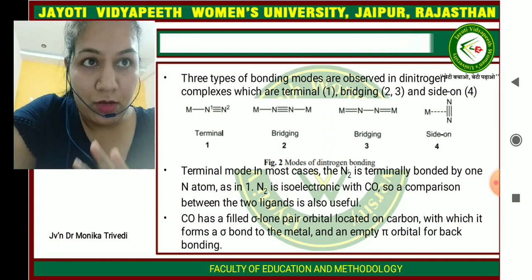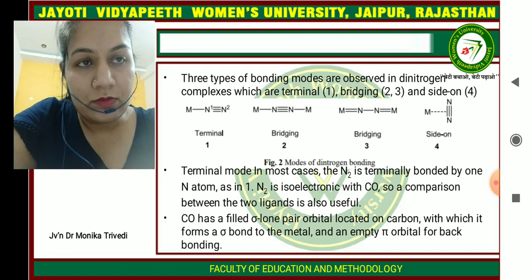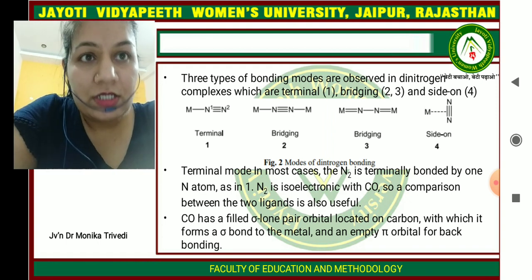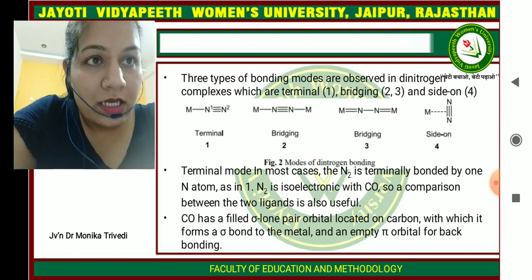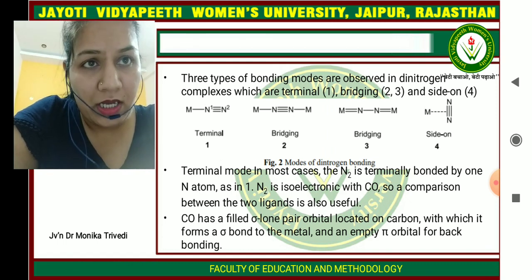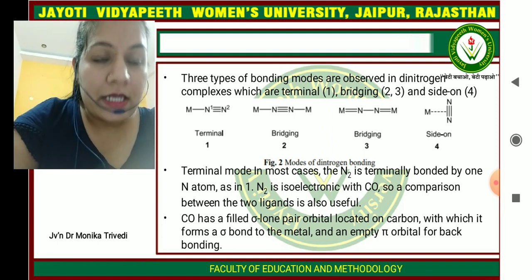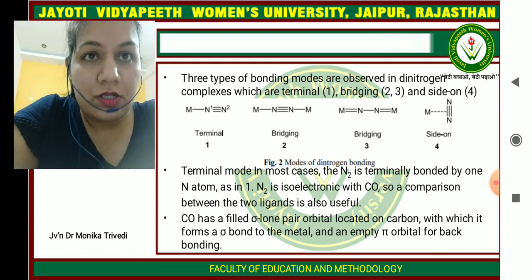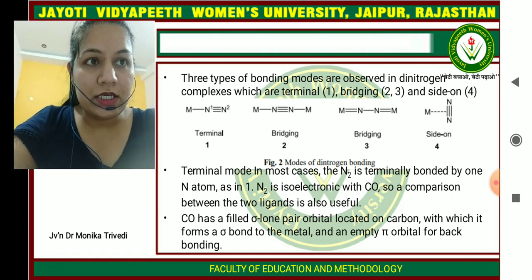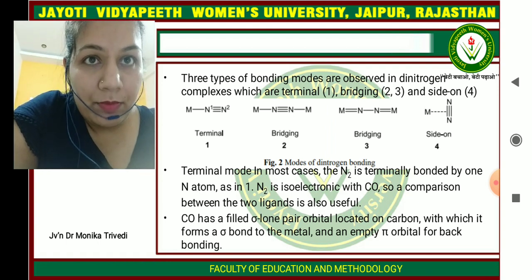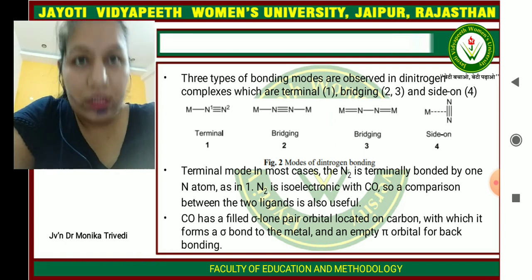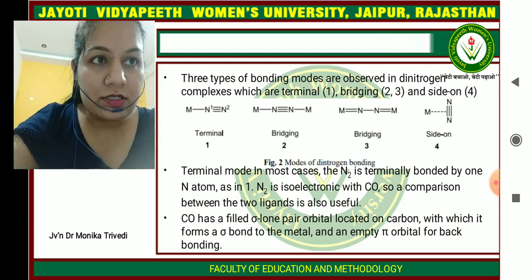Three types of bonding modes are observed in dinitrogen complexes: terminal, bridging, and side-on. In the terminal mode, the metal is attached to nitrogen-1, which is attached to the second nitrogen with a triple bond. In the bridging mode, two metals are present and two nitrogens are combined with a triple bond between them. In a second bridging type, nitrogen and nitrogen are combined with one bond and nitrogen and metal are combined with two bonds, with a pi bond present between metal and nitrogen. In the side-on mode, the two nitrogens are combined with a triple bond and the metal coordinates to that triple bond sideways.